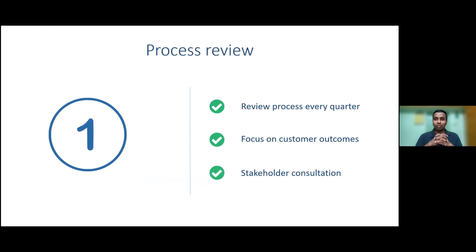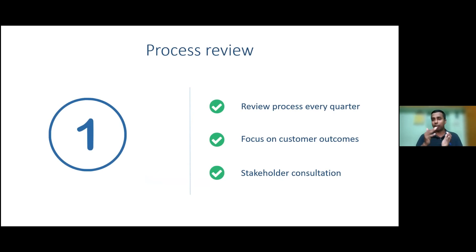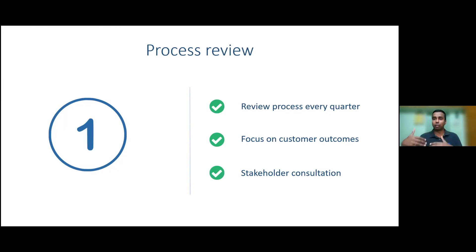Tip one: review your business process every quarter or every six months. Even after the process is established, things change and evolve, so you need to adapt. Bring all stakeholders together and ask: what's good about the current process? What are the bottlenecks? How do we solve business challenges? The review process is very essential.